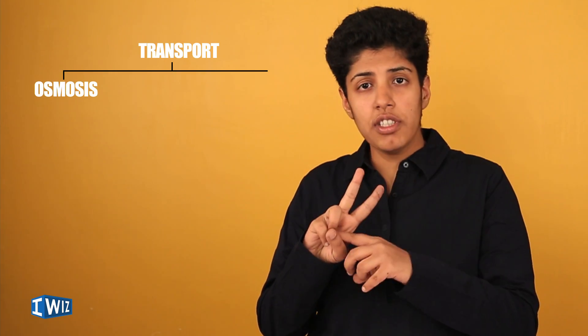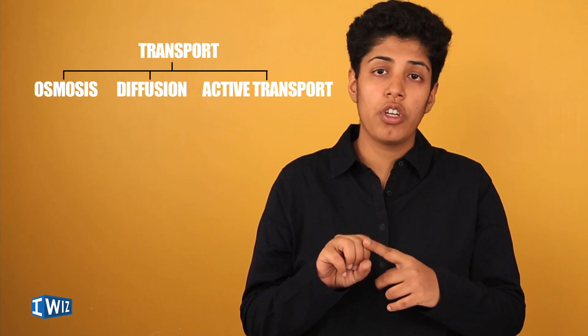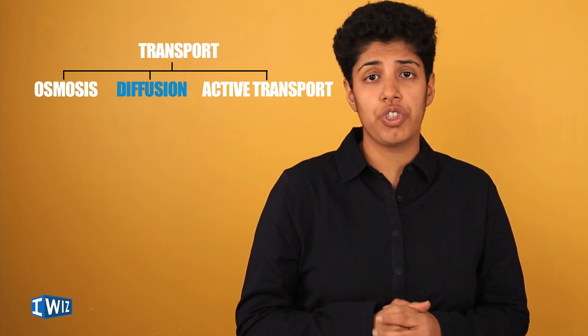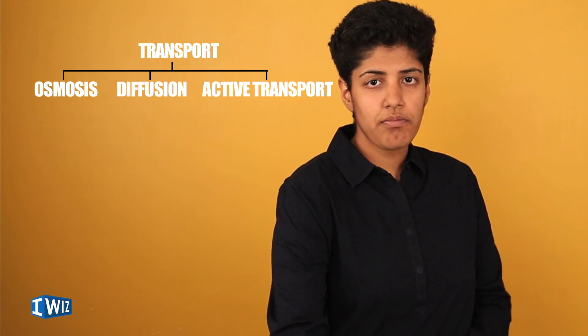Hi, I'm Geetha Thakur and today we are going to be learning about class 10 science CBSE, from the chapter life processes. We are going to understand cellular transport. There are three main ways that cells do transportation — they take in minerals, excrete waste, and take in water. Those three are osmosis, diffusion, and active transport.